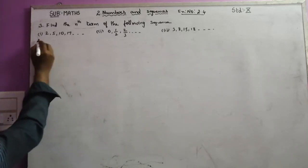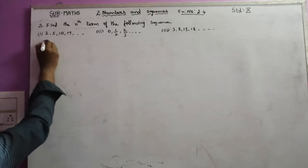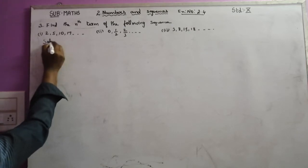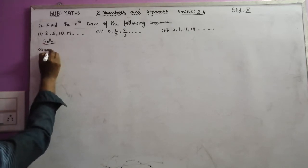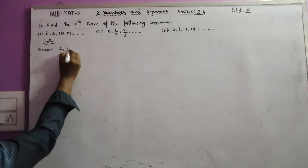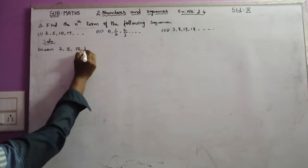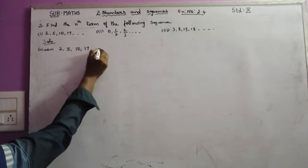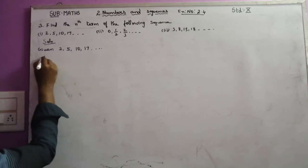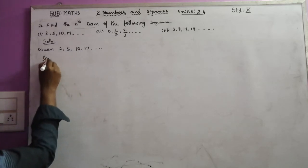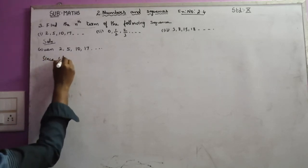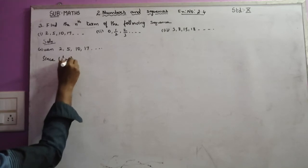3 solutions. First solution. Given: first solution — the sequence is 2, 5, 10, 17. Since 1 squared plus 1.